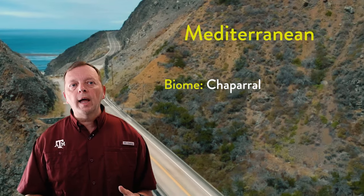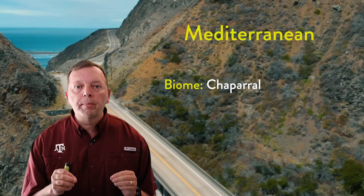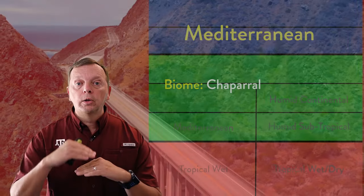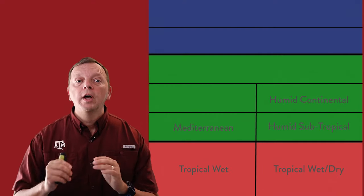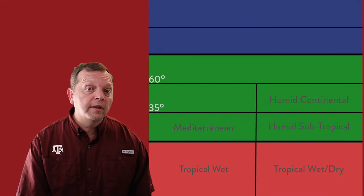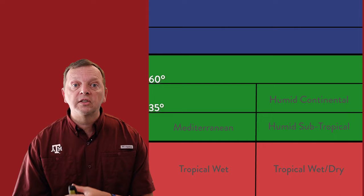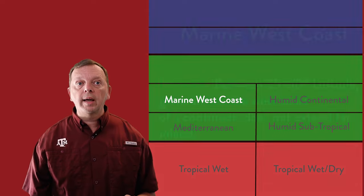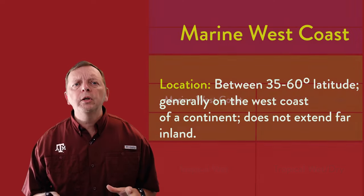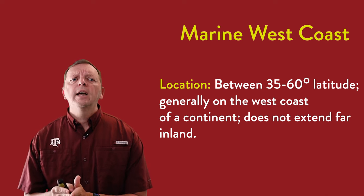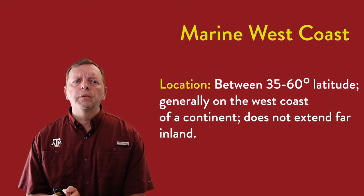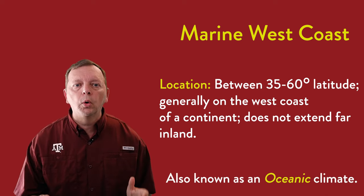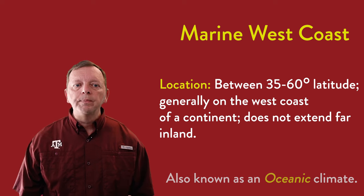The biome of the Mediterranean climate is the chaparral biome — shrubs and bushes. A bit closer to the poles, between about 35 and 60 degrees latitude, is the marine west coast climate, sometimes known as an oceanic climate, as it usually doesn't stretch too far inland and is largely influenced by the oceans.